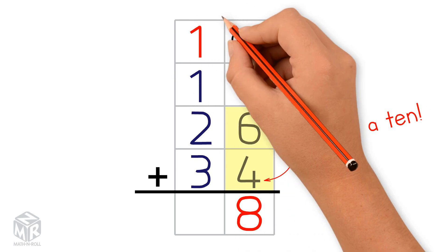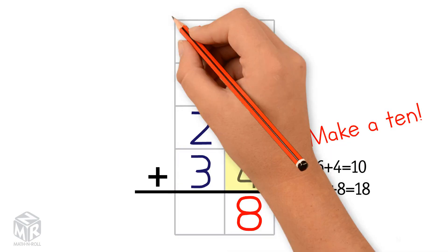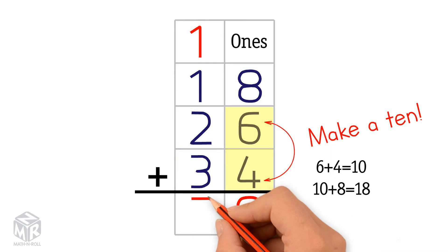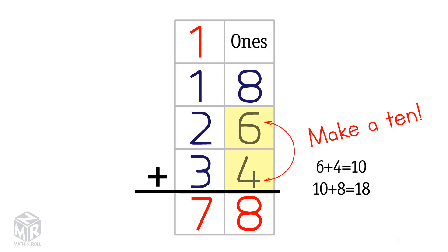Now we add the tens. 1 plus 1 plus 1 plus 2 plus 3 equals 7. So 18 plus 26 plus 34 equals 78.